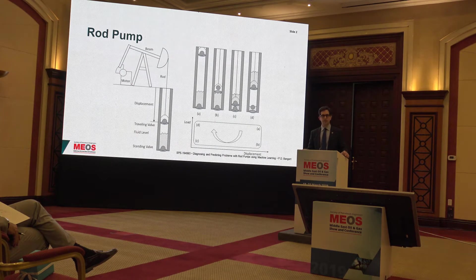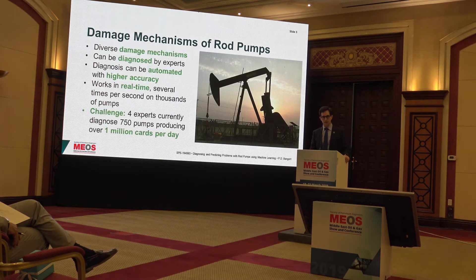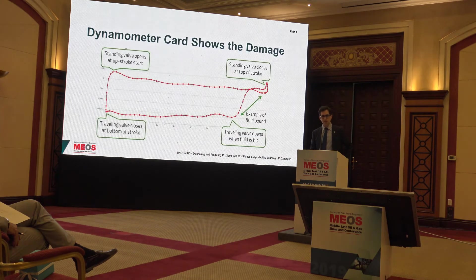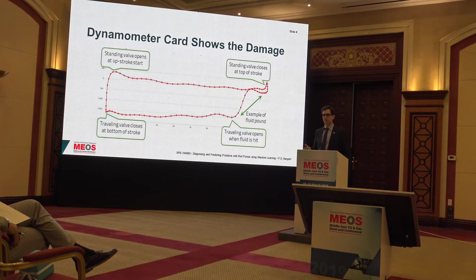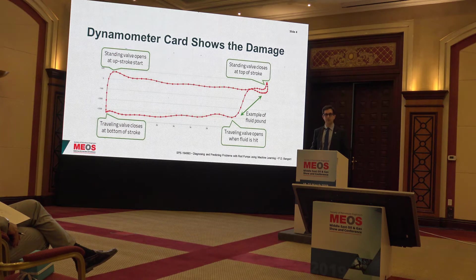Theoretically speaking, this looks roughly like a rectangle, as you see on this diagram. If we move to an actual picture, it looks like this in real life when we take a measurement of what these data actually look like. You can see that the rectangle has four corner points, which represent the traveling and standing valves opening and closing.